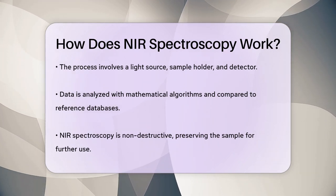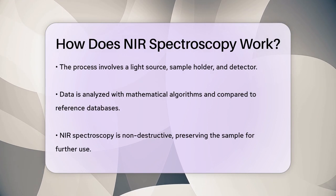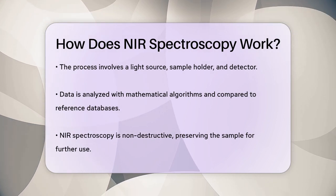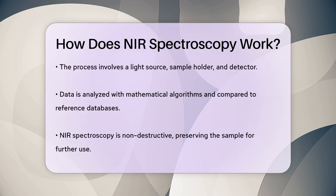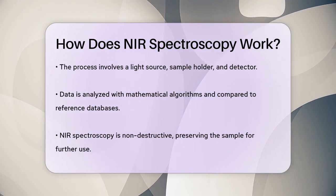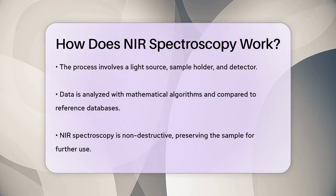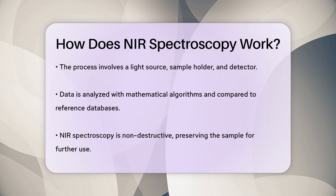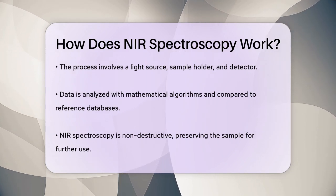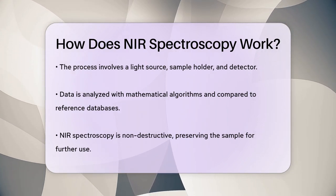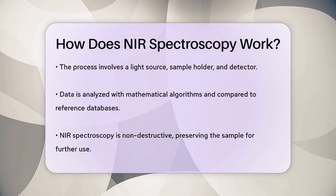The process involves using a light source to emit the NIR radiation, a sample holder to place the sample, and a detector to measure the intensity of the light that passes through or bounces off the sample. The data collected is then analyzed using advanced mathematical algorithms and compared to reference databases to get accurate results.